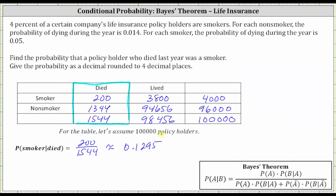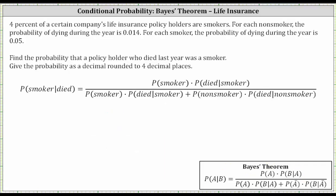Now let's determine the same probability using Bayes' theorem, which is shown here. When applying Bayes' theorem, event A is the policyholder was a smoker, and event B is the policyholder died during the year. The probability of a smoker given they died equals the probability of a smoker times the probability the policyholder died given they were a smoker, all divided by that same product plus the probability of a non-smoker times the probability the policyholder died given they were a non-smoker — where the complement of being a smoker is being a non-smoker.